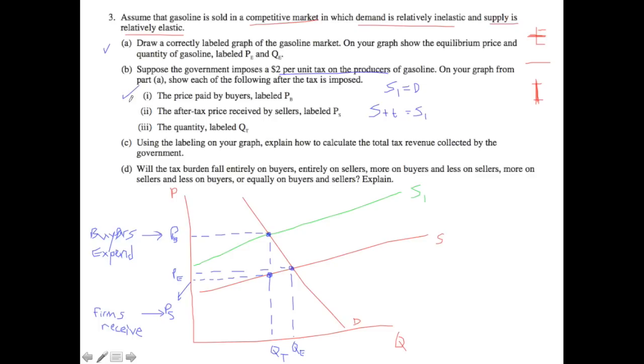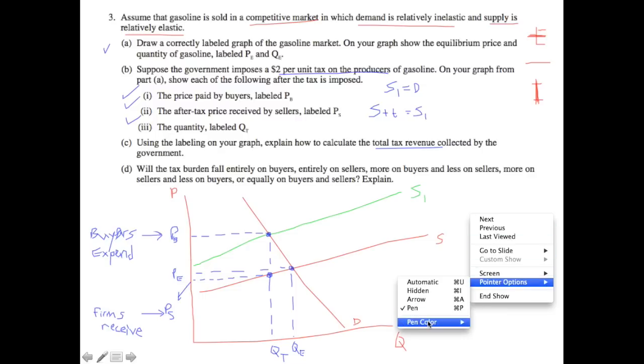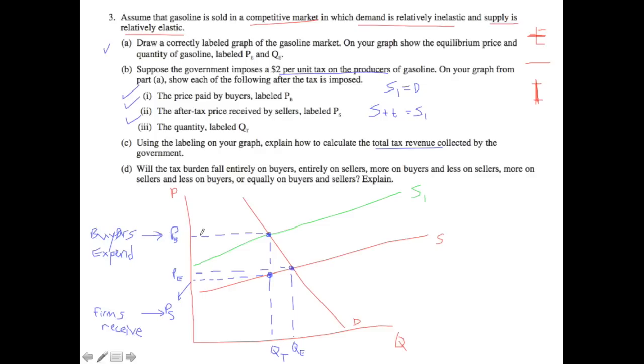All righty, so that solves PB, PS, and QT. Let's move to part C. Using the labeling on your graph, explain how to calculate the total tax revenue collected by the government. So in this question, we need to figure out what the total tax revenue is. And in this case, what you need to think about is what is the total cost involved and also what is the total revenue involved so that we can come up with the difference of that, which is going to give us what that tax incidence is. So the way to think about this is you take the difference between what buyers expend and what firms receive, and you multiply it by that QT of the quantity in the tax situation, and that will be your total tax revenue. So in other words, if I take out magenta, then I'm essentially going to find the area of this rectangle right here.